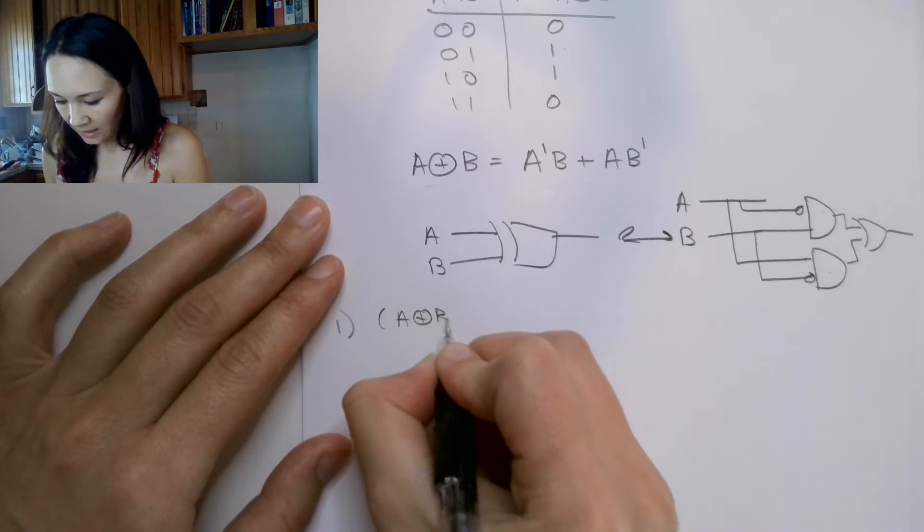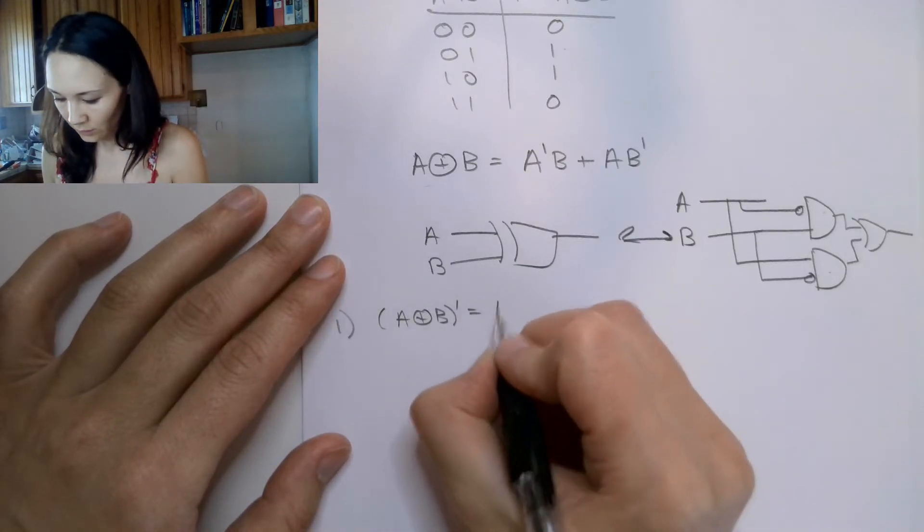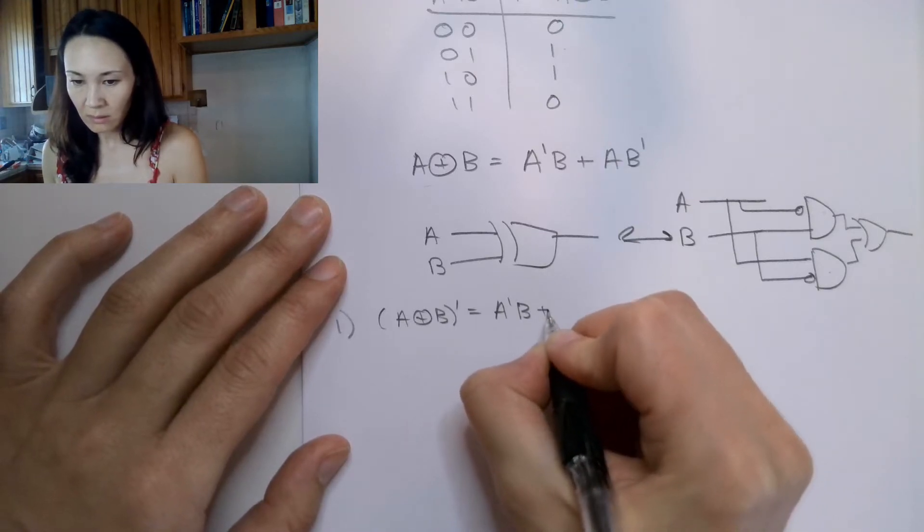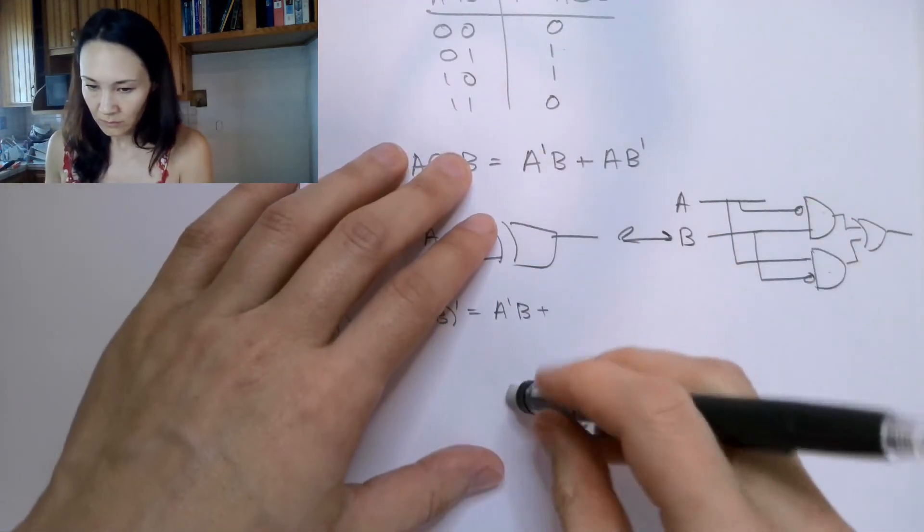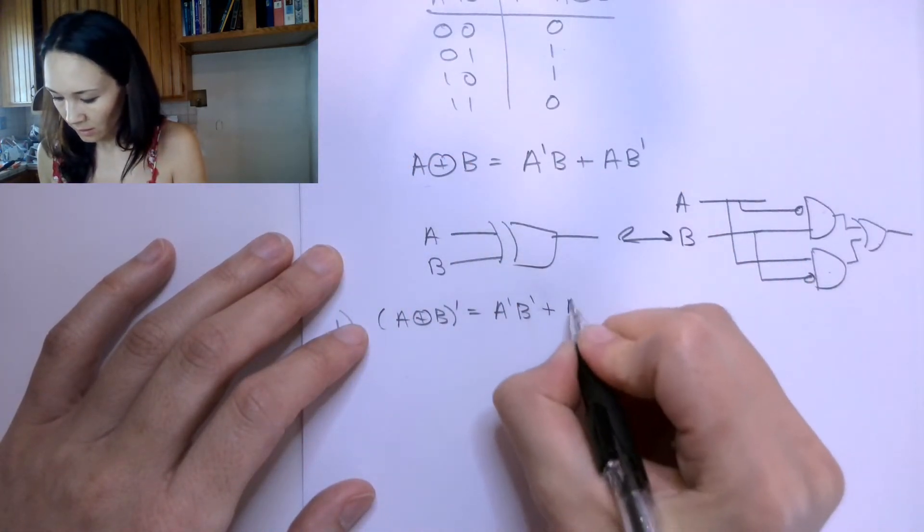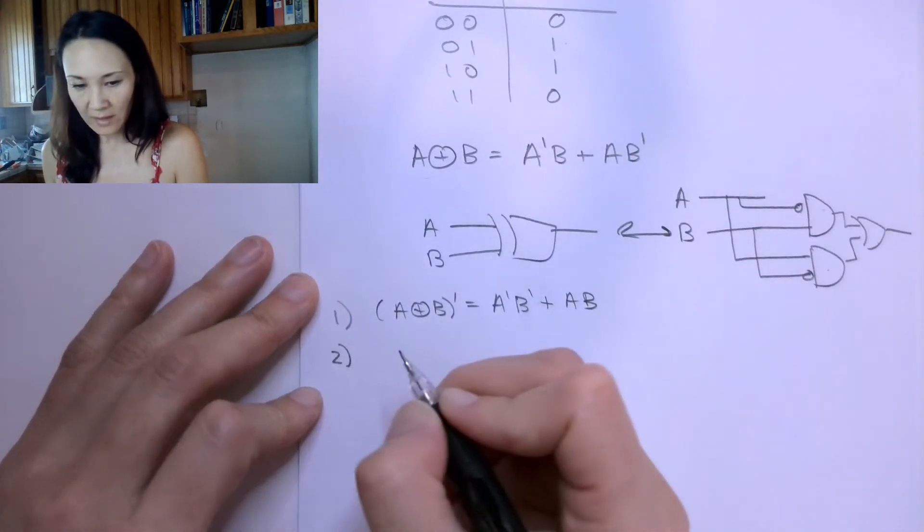So the first property is that if we have A and B XORed and we negate that, that is equal to A naught B naught or AB. Okay? And like I said, we'll prove that in the next video.